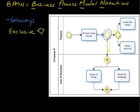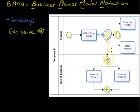Exclusive gateways are represented by diamonds without an icon, or you may also see them represented with an X. The next type of gateway we reach here in the process — if in fact there is a vendor code — then we're going to reach a second gateway, and that is a parallel gateway.